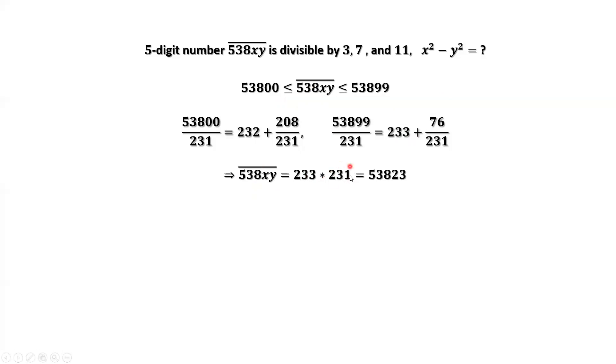This we derived at the very beginning. 231 is the product of the three numbers. This is also a factor of this number. So here we find the answer for this five-digit number.